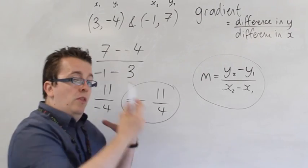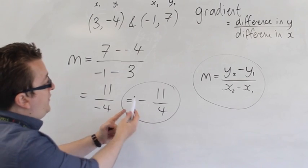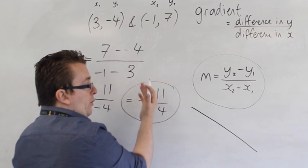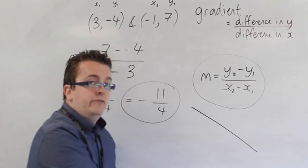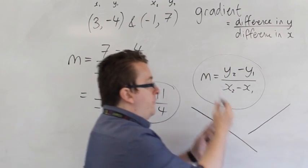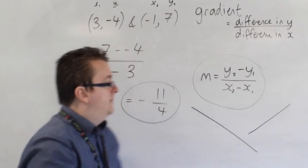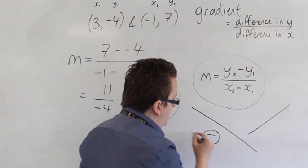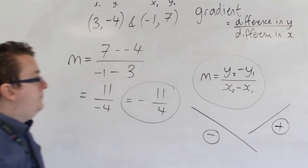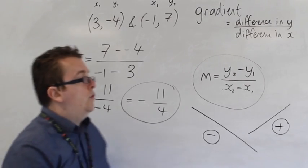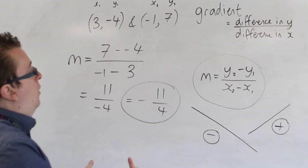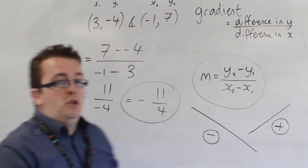So that means that because it's negative, it is going in that direction - so going from top left to bottom right, it has a negative gradient, rather than one with a positive gradient that would be going from bottom left to top right. So this is a negative gradient.